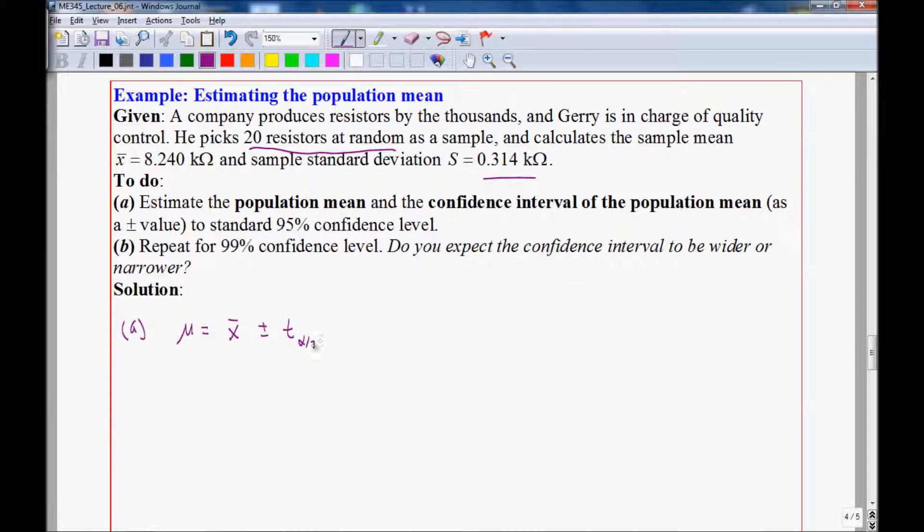plus or minus the critical T value, T alpha over 2, times standard deviation over square root of n, where n is the number of data points in the sample.